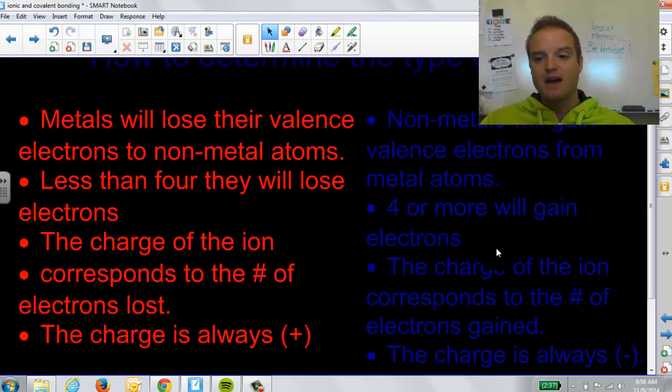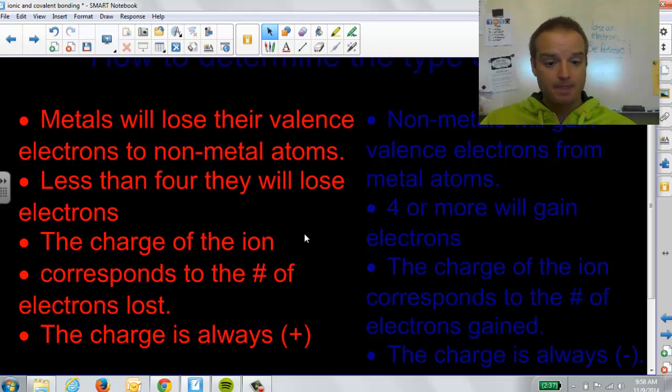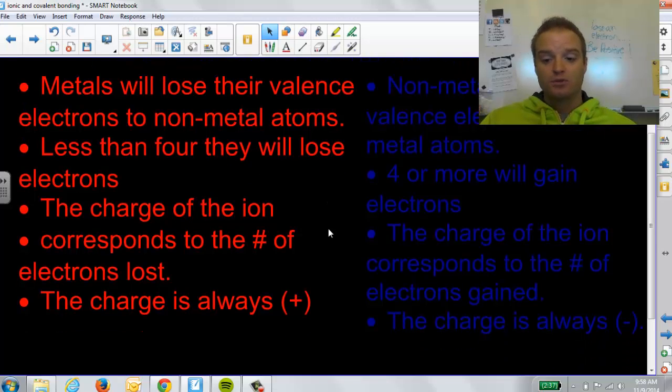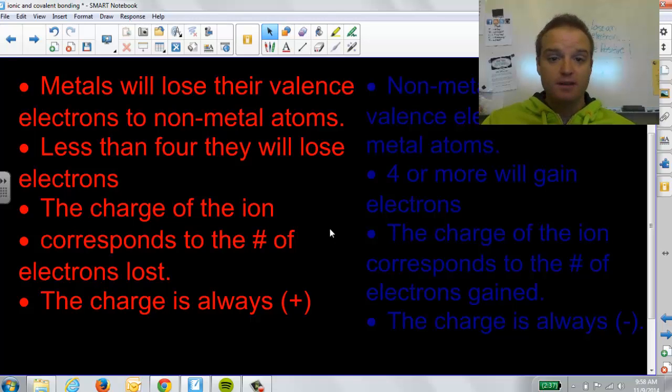On the other side, we have nonmetals. Nonmetals have four or more valence electrons. So, they tend to gain electrons. These guys tend to be the negative ions. Again, that charge corresponds to how many they gain or lose. If you gain one electron, now you have a negative one charge. If I gain two electrons, now I have a negative two charge. Depends how many you gain or lose. That determines how they bond and how many atoms bond with each other.